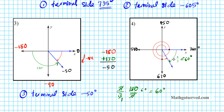Now, how many degrees are left here? This entire quadrant is 90 degrees. If 60 degrees is taken up by the clockwise rotation, in order to complete 90 you need 30 more degrees. So the angular rotation left is 30 degrees. Adding 30 to 630 takes you to 660 degrees. Alternatively, you can add another 90 to get 720 and then subtract 60 to back up, also giving 660 degrees.